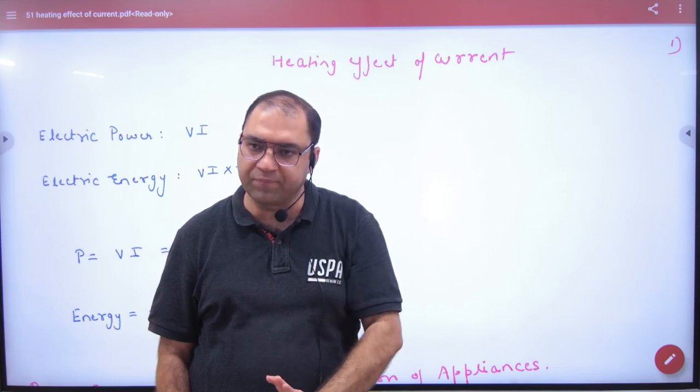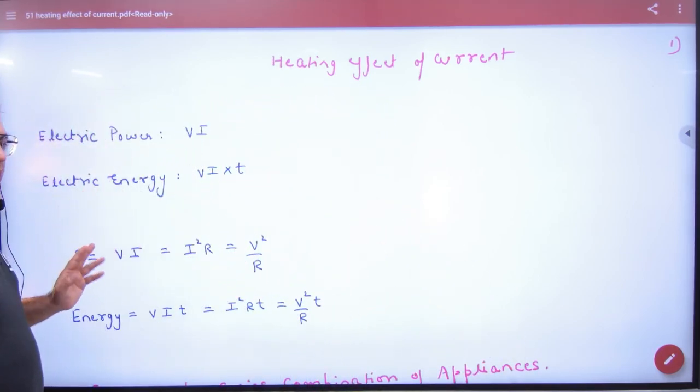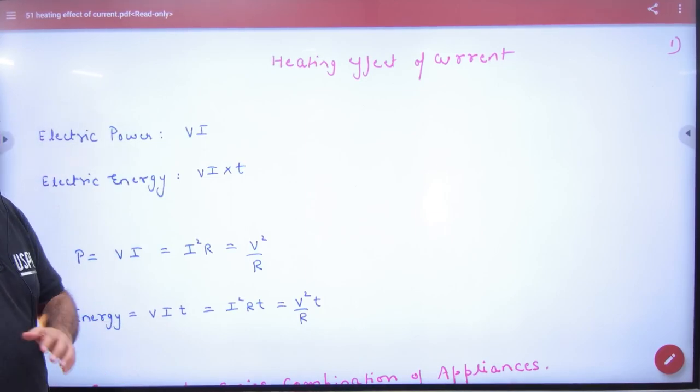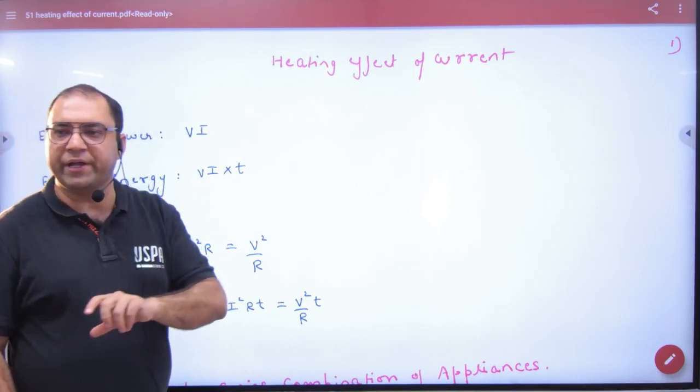You note in the formula register that power is V into I. Second, energy. What is power into time? So how much energy T time will release or how much energy T time will dissipate? V into I into T.